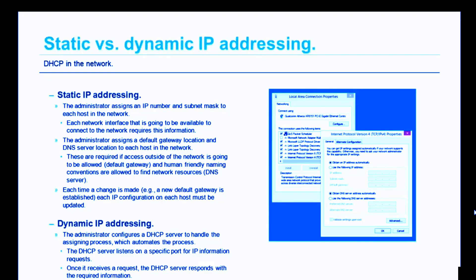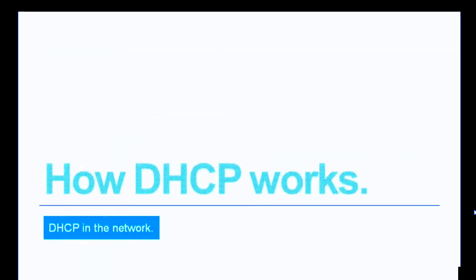With dynamic IP addressing, the administrator configures a DHCP server to handle the assignment process, which automates the process and eases management. The DHCP server listens on a specific port for IP information requests. Once it receives a request, the DHCP server responds with the required information.